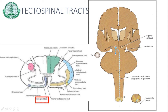Moving on to the tectospinal tract — it lies between the vestibulospinal and anterior corticospinal tracts, by the side of the anterior medial fissure. It arises from the superior colliculus, crosses to the opposite side, and extends downwards. Importantly, it extends only up to the cervical region. As this tract is confined to the cervical segments, it forms part of the reflex pathway for turning the head in response to hearing, visual, and other exteroceptive stimuli.